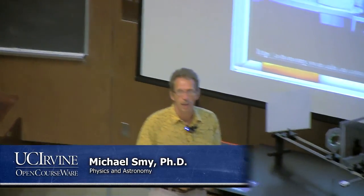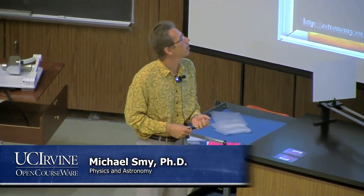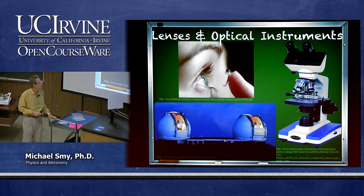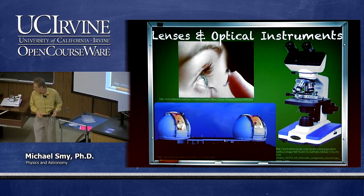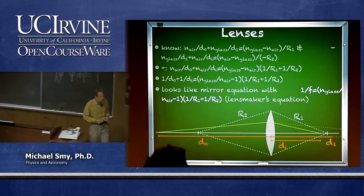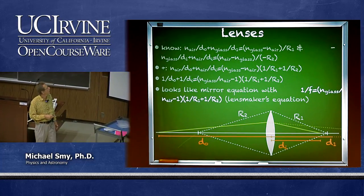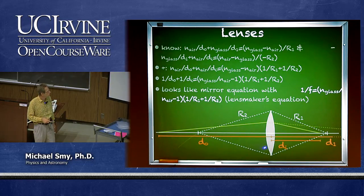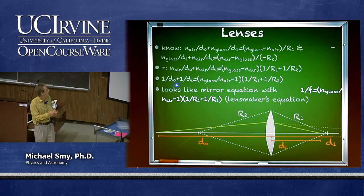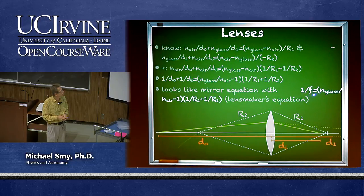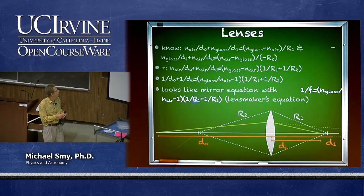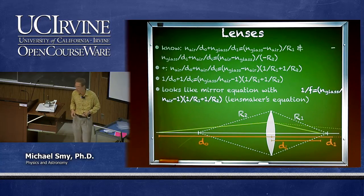Hello. We started a new chapter last week about lenses in general and optical instruments. I introduced the subject of lenses by finding the image point for a thin lens, given the radius of curvature of both surfaces. We found that the equation relating object and image distance looks like a mirror equation, where the inverse focal length is given by (n_glass/n_air - 1) times the sum of the inverse curvatures of the two surfaces. This is called the lens maker's equation.